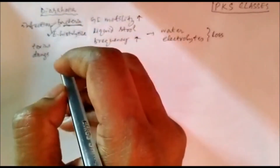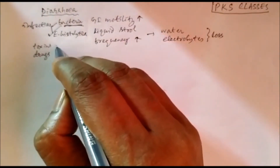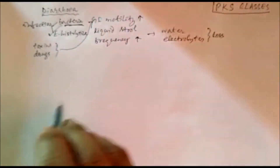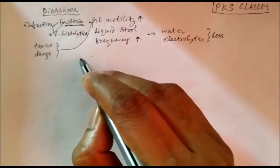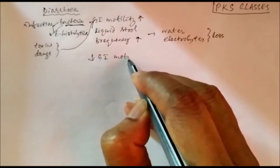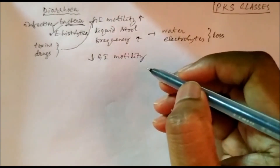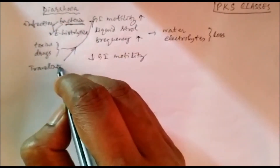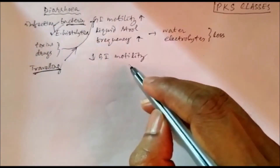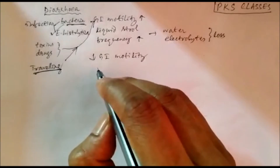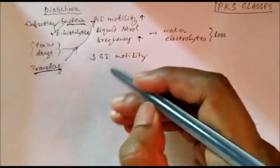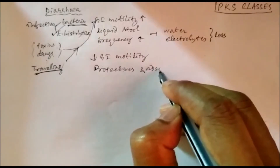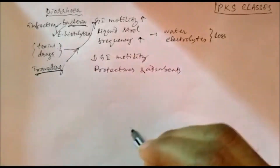Toxins and drugs can also increase the motility and can cause diarrhea. In those cases we can reduce the GI motility. There is another condition called traveler's diarrhea, where traveling also induces motility in some patients. In that case we can reduce GI motility and also adsorb toxins inside the GI lumen using protectives and adsorbents.